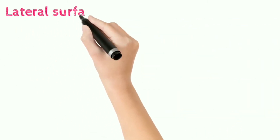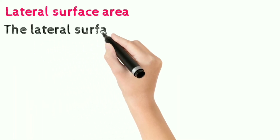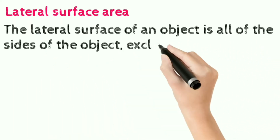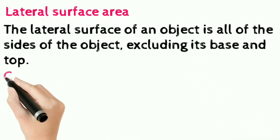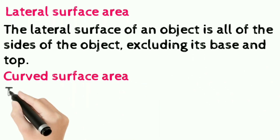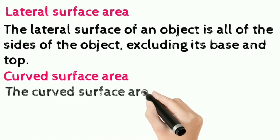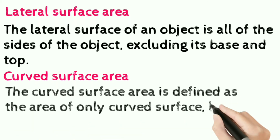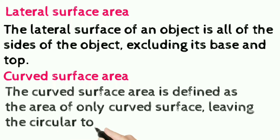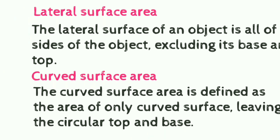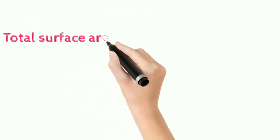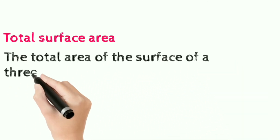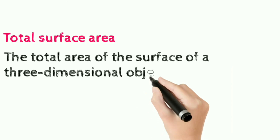Lateral surface area: the lateral surface area of an object is all of the sides of the object excluding its top and base. Curved surface area: defined as the area of only the curved surface, leaving the circular top and base. Total surface area: the total area of the surface of a three-dimensional object.